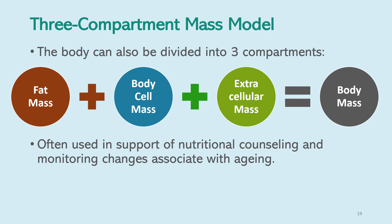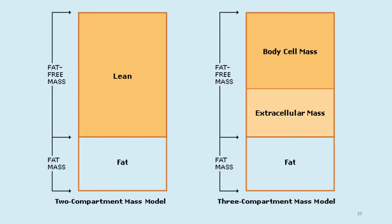The body can also be divided into three compartments: fat mass, body cell mass, and extracellular mass. This three-compartment mass model is often used in support of nutritional counselling and monitoring changes associated with ageing. In the three-compartment model, the fat-free mass area is further divided into body cell mass and extracellular mass.